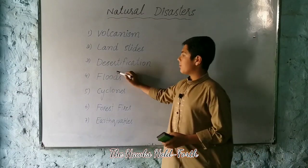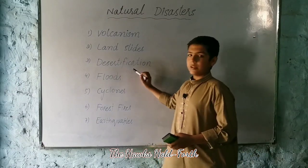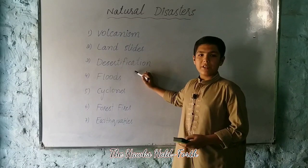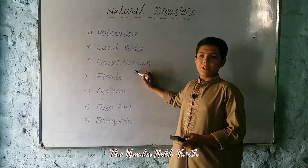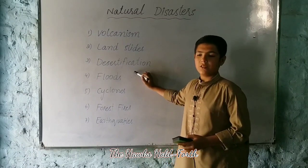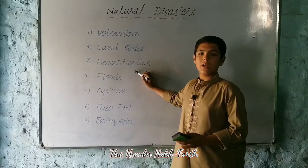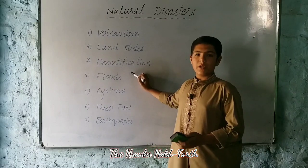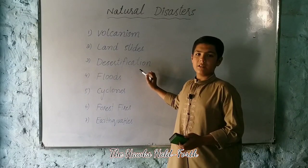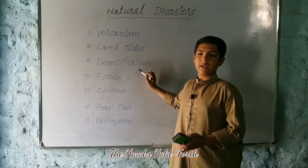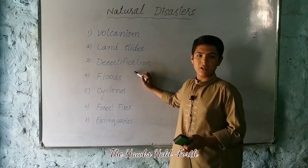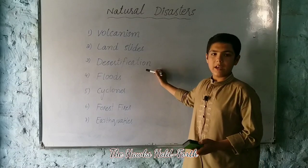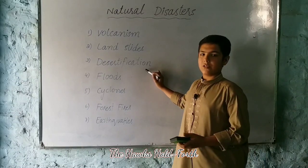Number three is desertification. Desertification means the loss of fertile land and expansion of desert. Desertification occurs very frequently, and many areas of Pakistan are also affected, such as the southeast areas of Sindh and Balochistan, which are desertified.